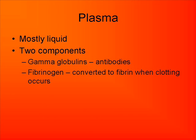As mentioned before, plasma is mostly a liquid, and the main liquid in plasma is water, since the majority of your body is made of water. There are two major components of plasma aside from the liquid: gamma globulins, which are types of antibodies, and fibrinogen. Fibrinogen is converted into something called fibrin, which is actually what does the clotting — we'll come back to that later.